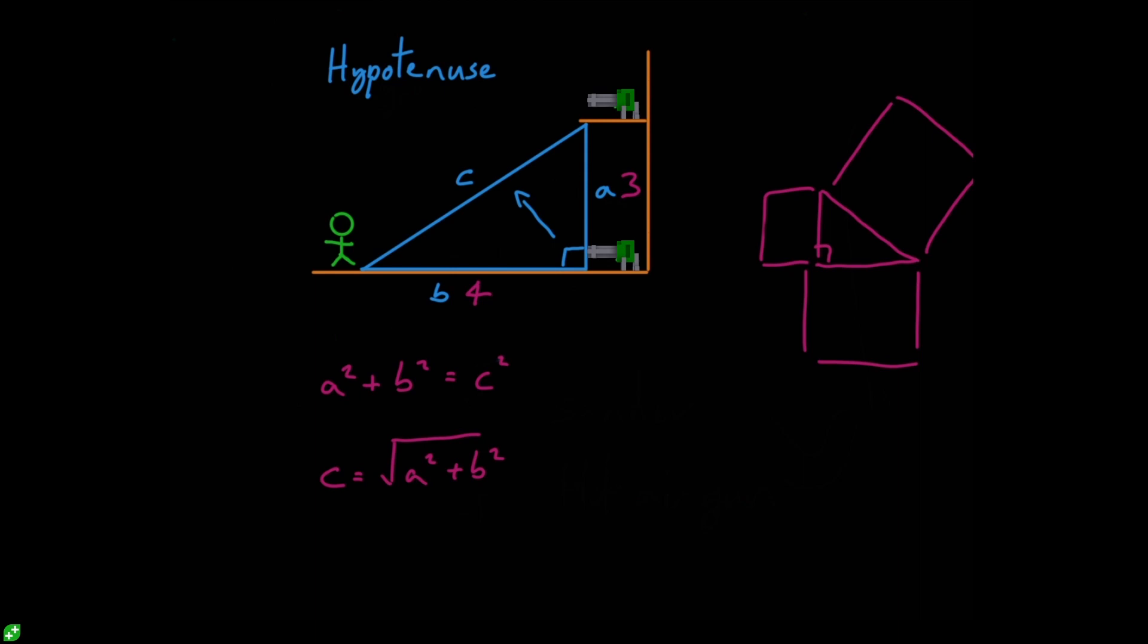And now it's just a case of plugging in our different numbers. So we've got C is going to equal the square root of A squared. Well, A squared is three, so three squared is going to be nine plus B squared, which is four. Well, four squared is going to give us 16. So C is going to equal the square root of 25, which is going to equal five. So we can say that our C here is going to equal five.